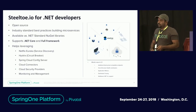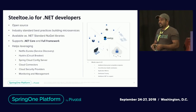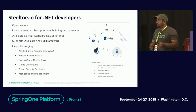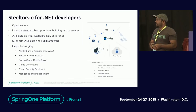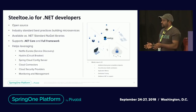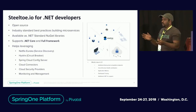Steeltoe is an open source framework built by Pivotal. It helps developers accelerate and build microservices and apply best practices. It supports .NET Core and .NET Full Framework — people sometimes get confused thinking Steeltoe only supports .NET Core, but it supports both. It also helps leverage most Spring Cloud services like Spring Cloud Config Server, and has a lot of connectors to seamlessly integrate backing services and marketplace services with your .NET application, just like Java developers do.